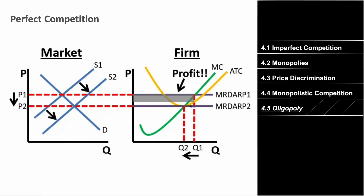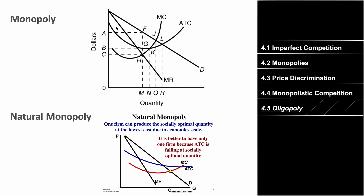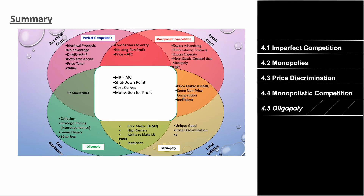Profit-maximizing: MC equals MR equals demand. For monopoly, MR is below the demand curve with ATC and MC present, and monopolies earn excess profit above normal. Natural monopolies have an elongated ATC and MC shape; the socially optimal point is where MC meets demand. For oligopolies, use game theory — remember barriers to entry and fewer than ten firms. Memorize the graphs and understand all similarities and you should be ready for this unit.